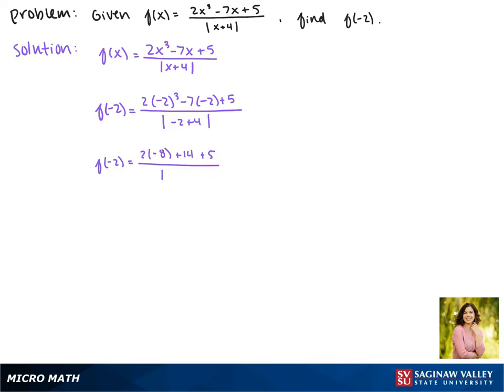In the denominator, negative 2 plus 4 gives us 2, so we have the absolute value of 2.